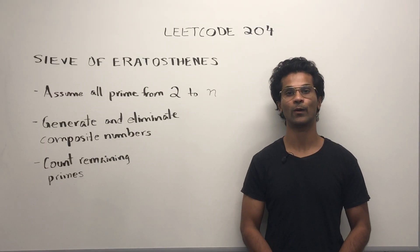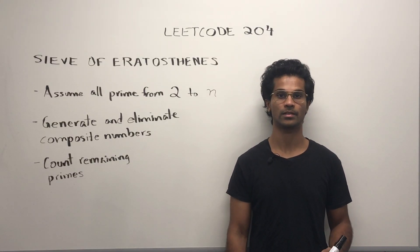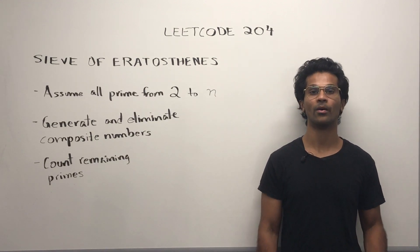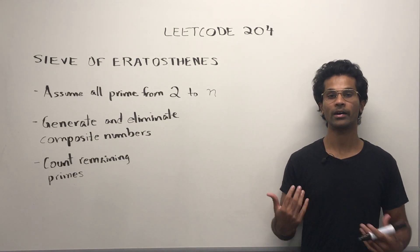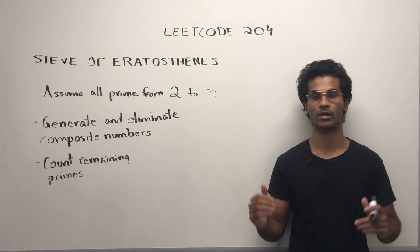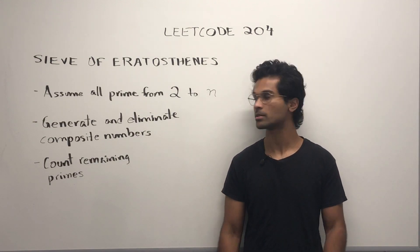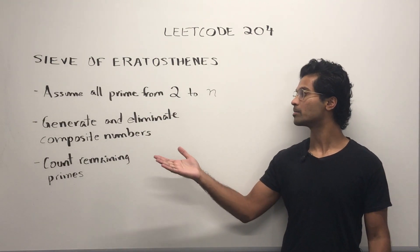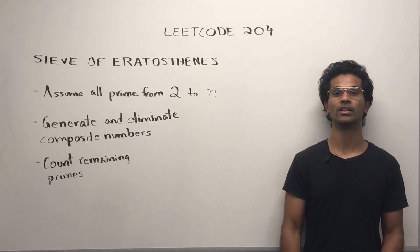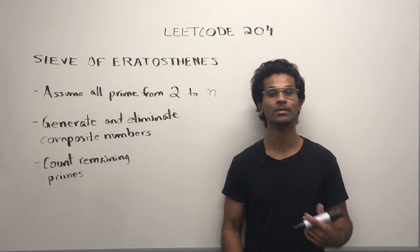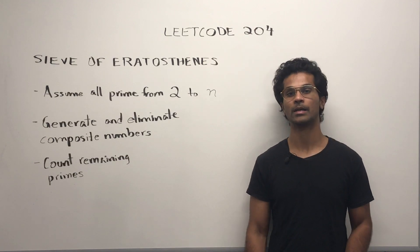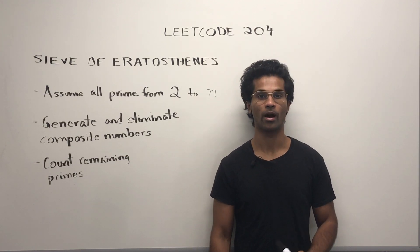The approach is called Sieve of Eratosthenes. This is a well-known algorithm, but I want to explain how I internalize it and how I'm going to remember it. So there's three steps. First we assume all primes from 2 to n, then we generate and eliminate composite numbers, and finally, we count all the remaining primes.